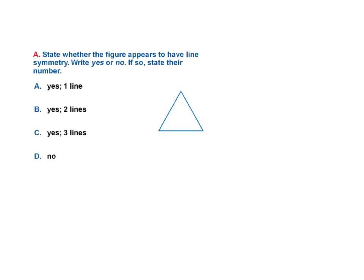So, state whether the figure appears to have line of symmetry, write yes or no. If so, state their number. So I could draw a line here. I could draw a line here. I could draw a line here. So that's going to be yes by three lines. So I'm looking at all the different possibilities here I could go by.